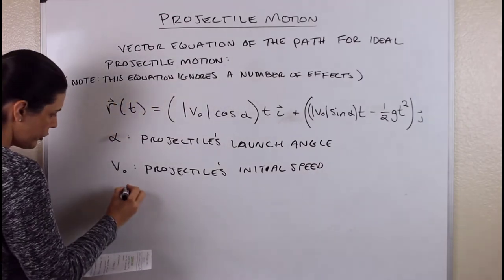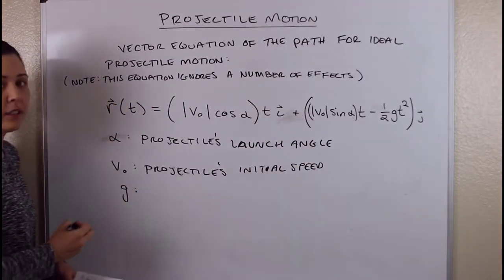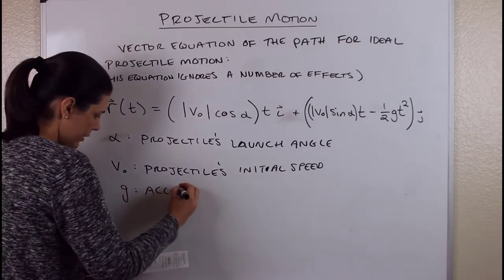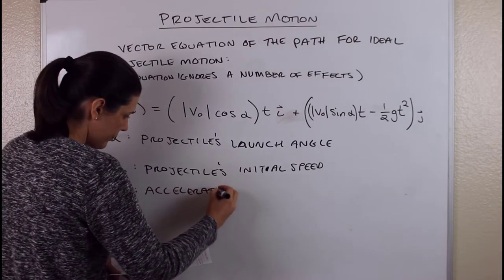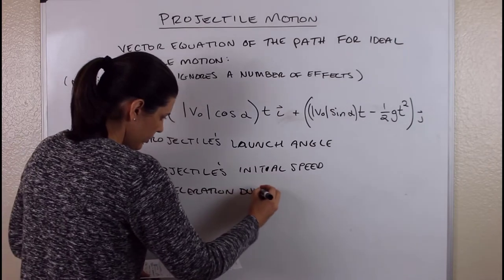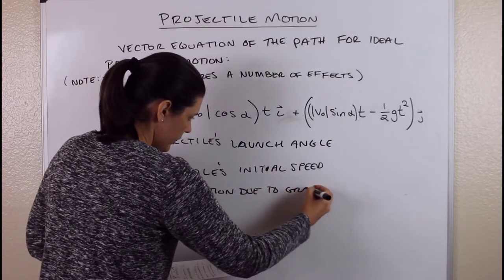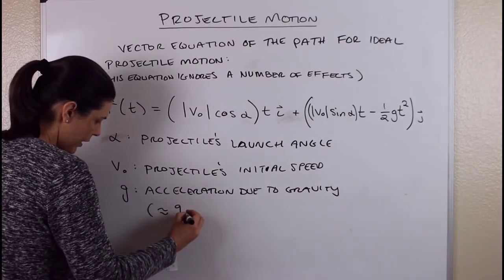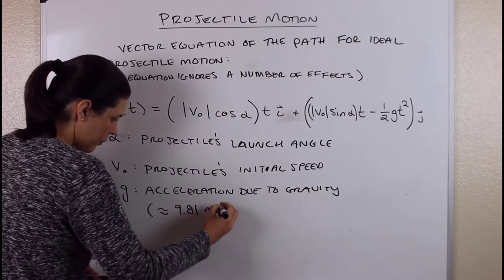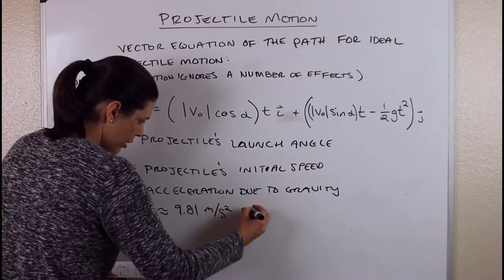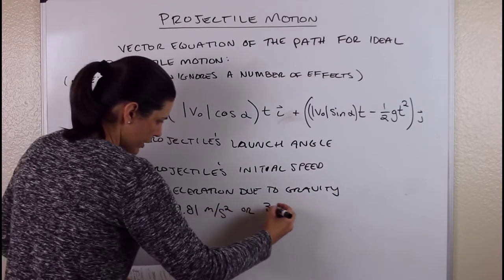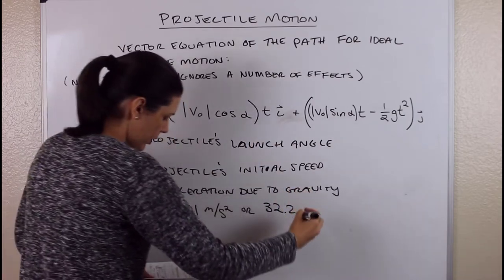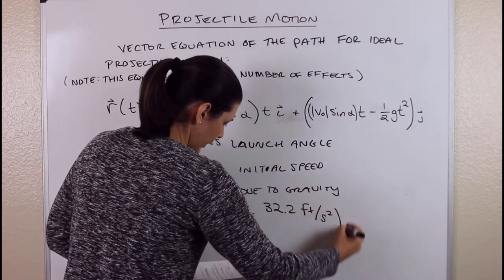And then what's g? It's going to be acceleration due to gravity. That's approximately 9.81 meters per second squared, or if you're going to use feet, that's about 32.2 feet per second squared.